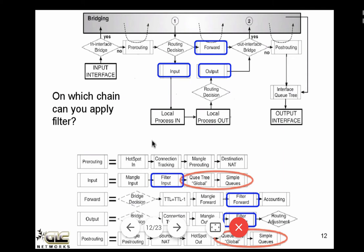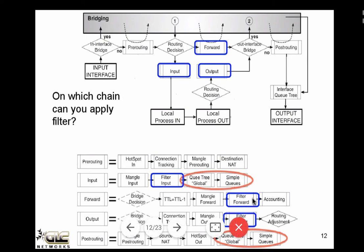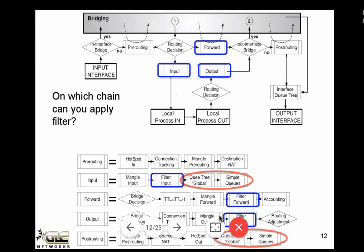When we talk about the filter table, these are the chains used by the filter: you can apply filter on input, forward, and output. If you zoom into the sub-process, filter input is executed after mangle input, then it goes to queue. On the forward chain, filter forward is executed after TTL processing and mangle. On output, the filter is executed after mangle output, and before that there is connection tracking.